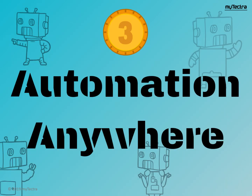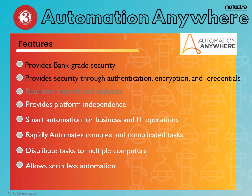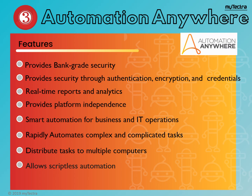The next RPA tool is Automation Anywhere. This RPA tool combines standard RPA with intelligent elements like language understanding and addressing any unstructured data. It provides on-premise and cloud services. This is a user-friendly tool which is ideal for large and medium organizations. The main features are: it provides bank-grade security through authentication, encryption, and credentials. Real-time reports and analytics. Provides platform independence. Smart automation for business and IT operations. Rapidly automates complex and complicated tasks. Distributes tasks to multiple computers. It allows script-less automation.